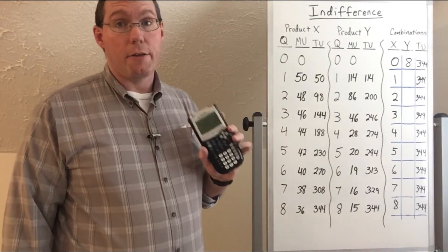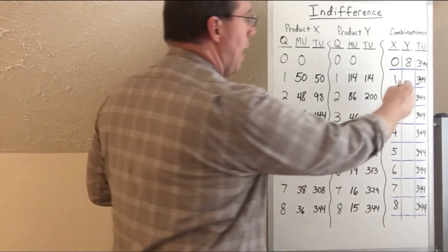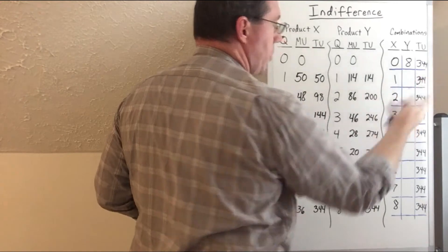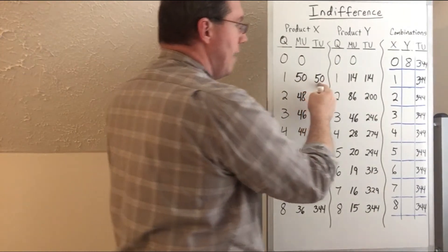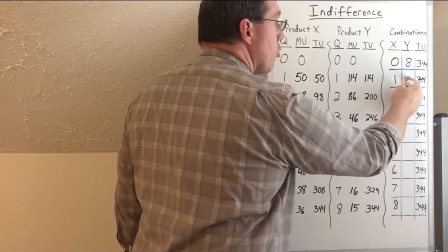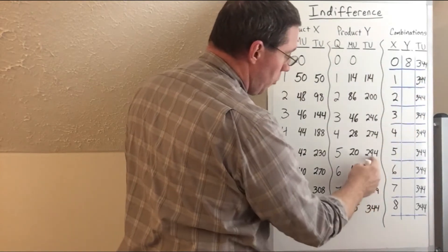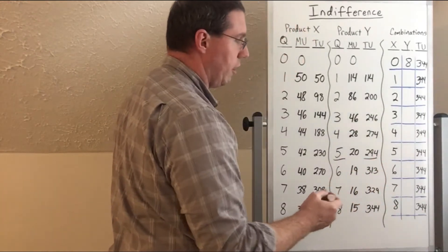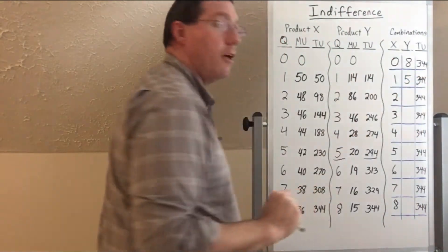I've gone ahead and gotten a calculator. We want to know how many units of product Y combined with one unit of product X would give us 344 total utility. One unit of product X gives us 50 utility, so I subtract 50 from 344, which gives me 294. I need a number of units of Y that gives me 294 utility — and that's five units of product Y. So 294 plus 50 gives us 344.